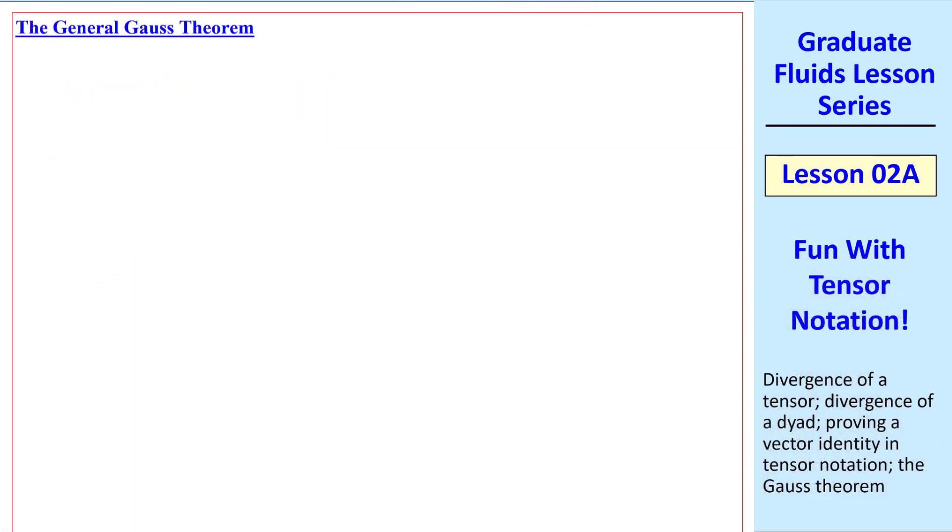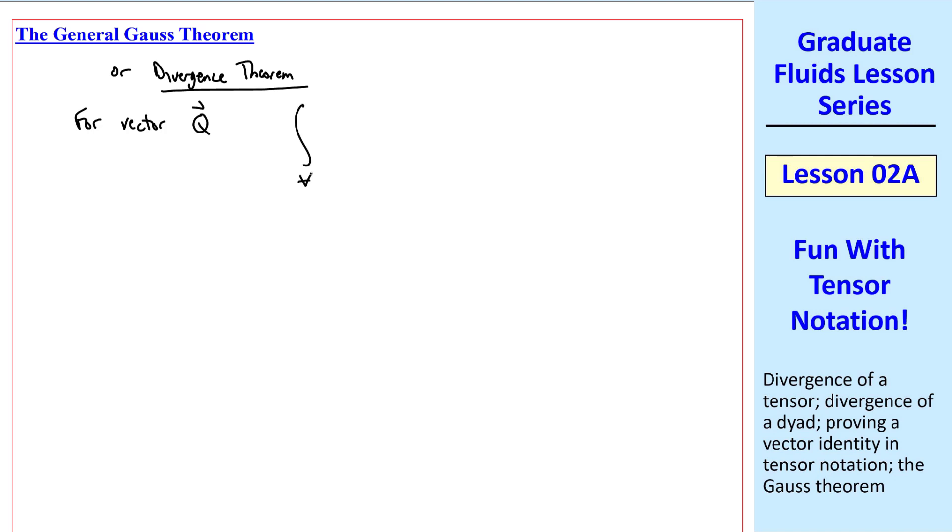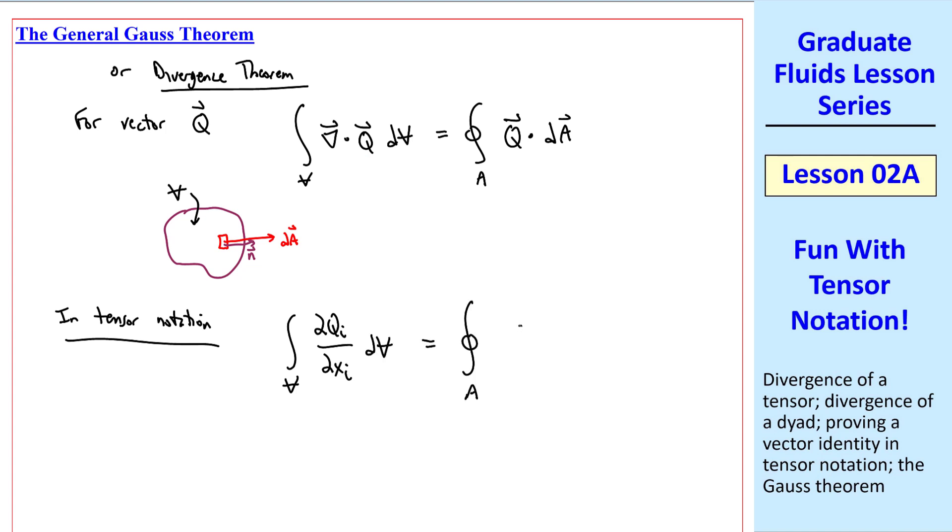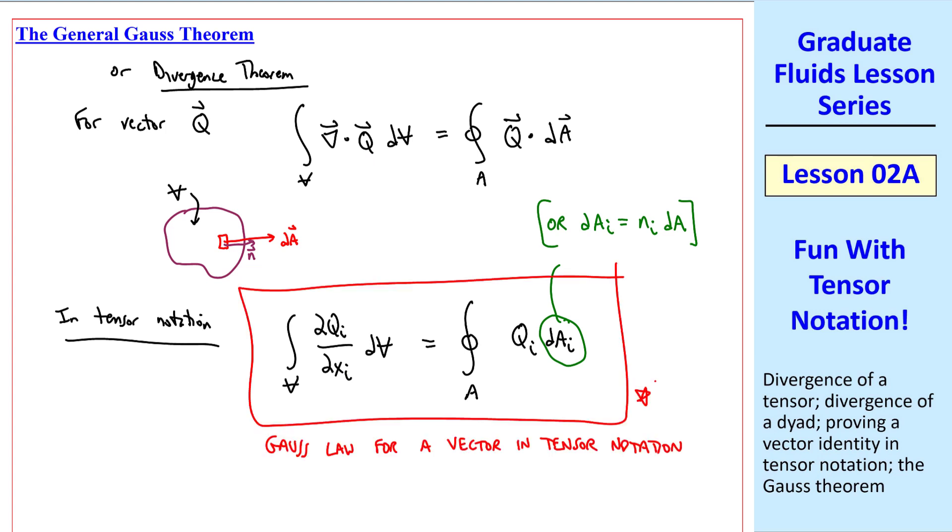Now let's look at the general Gauss theorem, which some people call the Gauss law or the Gaussian law. It's also called the divergence theorem. For some vector q, we integrate over the volume del dot q d volume equal the integral over the area. This is a surface integral. And the circle means we're integrating over the entire surface area that defines this volume. And we integrate q dot dA. If this is our volume, dA is the outward normal area element with unit vector n. In tensor notation, and I'll use simplified tensor notation here, we have the volume integral del dot q is del qi del xi dv equal the area integral of the dot product qi dAi, where the i's are repeated because of the dot products. Some textbooks may write this as dAi equal nI dA. This is the Gauss law for a vector in tensor notation.